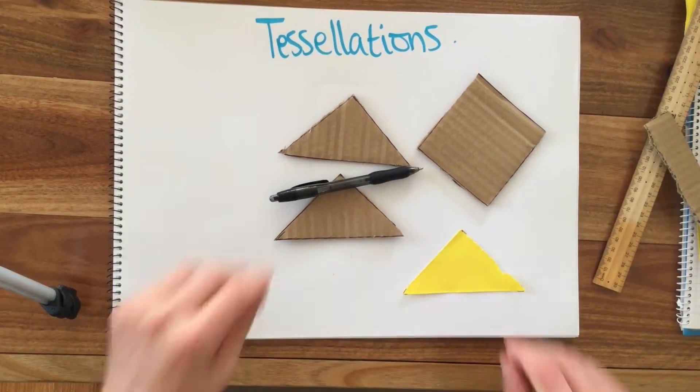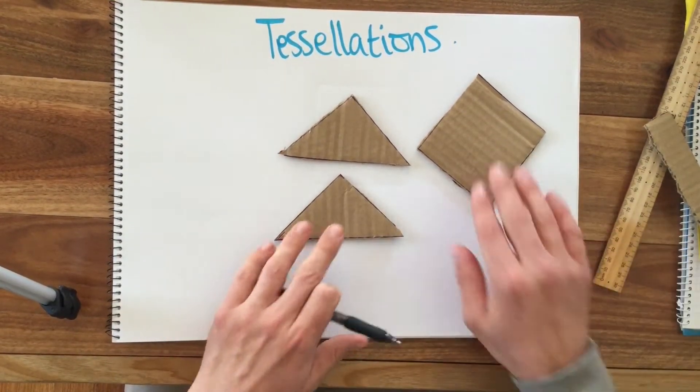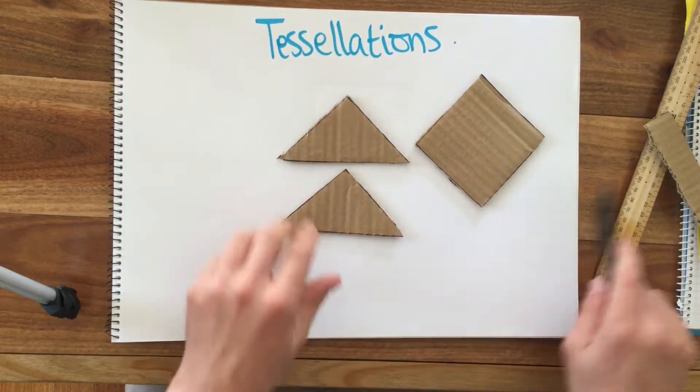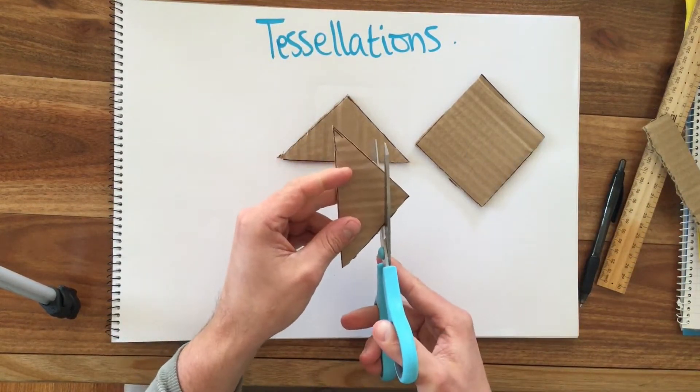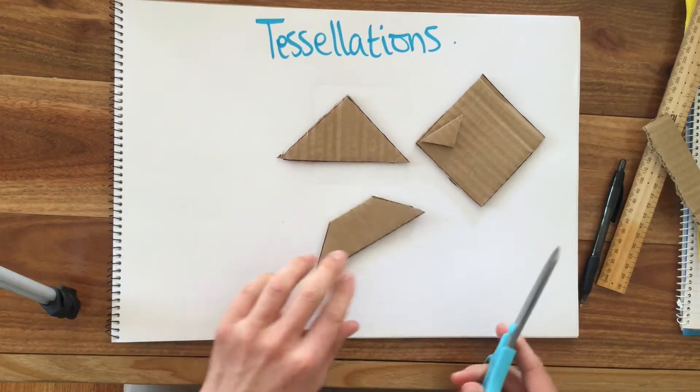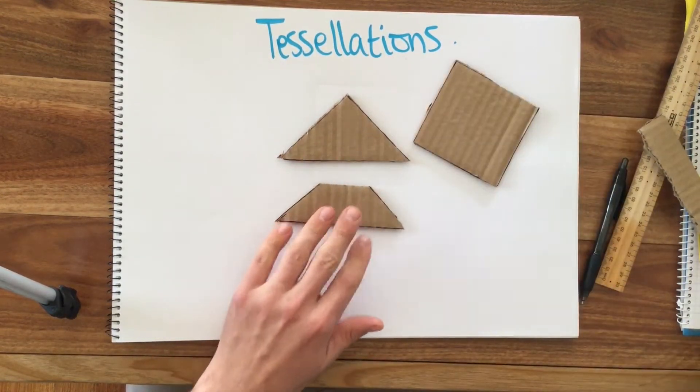Okay, in this video we're going to use the stencils that you made before. Now I've got two triangles as you can see. I'm going to cut the top off and now I've got a trapezium. It's that easy to make new shapes.